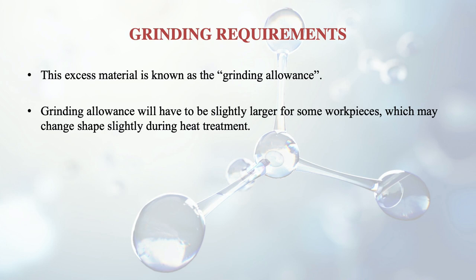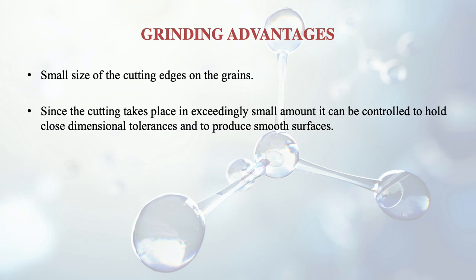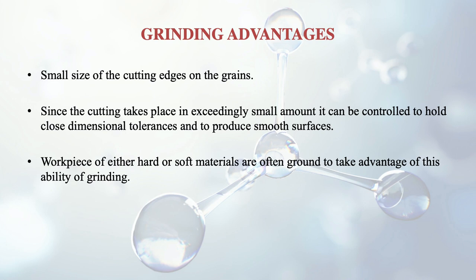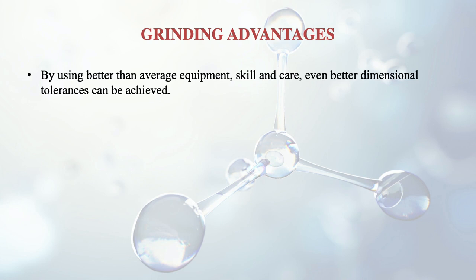The advantages of grinding include small size cutting edges on the grains, which means cutting takes place in exceedingly small amounts and can be controlled to hold close dimensional tolerances while also producing smooth surfaces. Workpieces of either hard or soft materials are often ground to take advantage of this ability. Dimensional tolerances as small as 0.0025 mm and surface smoothness of 0.0025 mm are easily obtained by grinding. With better than average equipment, skill and care, even smaller tolerances can be achieved.